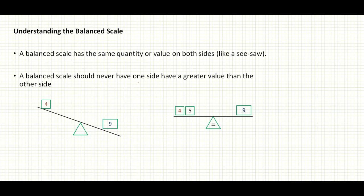Now let's look at the balance scale. For a scale to be balanced, you have the same quantity or value on both sides, almost like a seesaw. So if you look at this example, you have four on this side and nine on this side. A balance scale should never have one side greater than the other, so this example is unbalanced because you have nine on one side and four on the other.